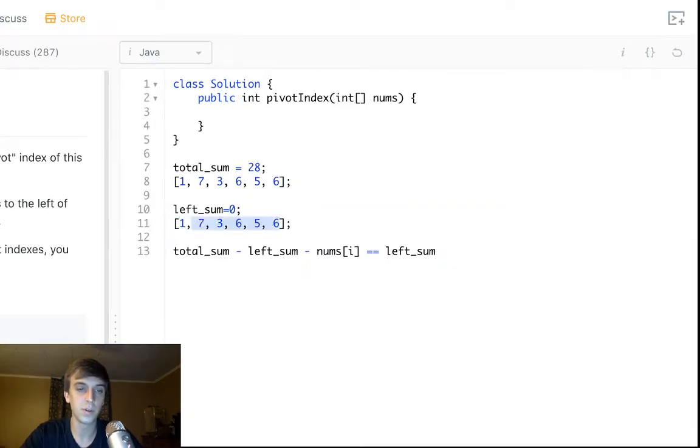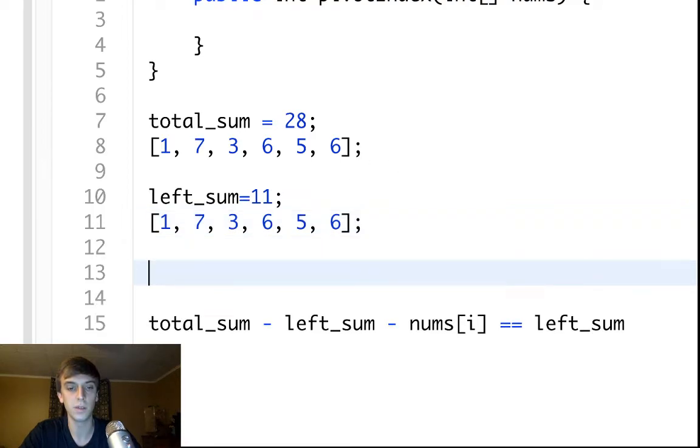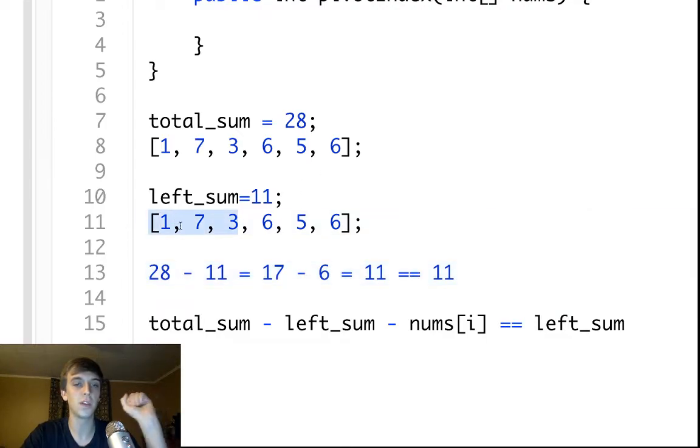What you're going to do is you're going to check the current number. The current number isn't a part of the left or the right sum. So you're going to check the current number first and you're going to say if the left and right aren't equal, then you're going to add it on. So total sum minus eleven minus six. So twenty-eight minus eleven is equal to seventeen, and then seventeen minus six is equal to eleven. If eleven is equal to eleven, then the left and right are equal because we know the total, we subtract what we've seen, and we subtract the current number.